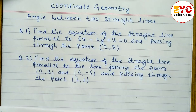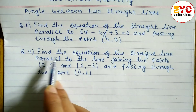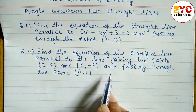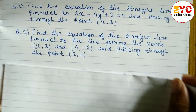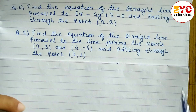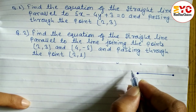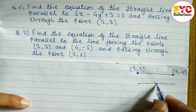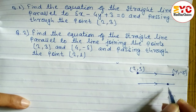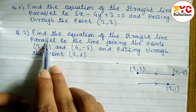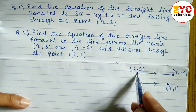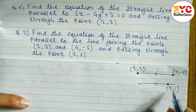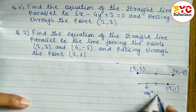Now look at question number two: find the equation of a straight line parallel to the line joining two given points and passing through another point. Two points are given: (2, 3) and (4, -5). We have to find the equation of a line parallel to the line joining these two points and passing through the point (2, 1).